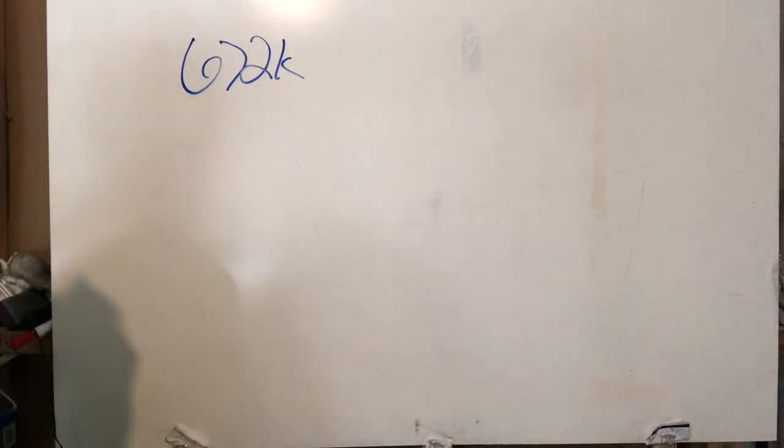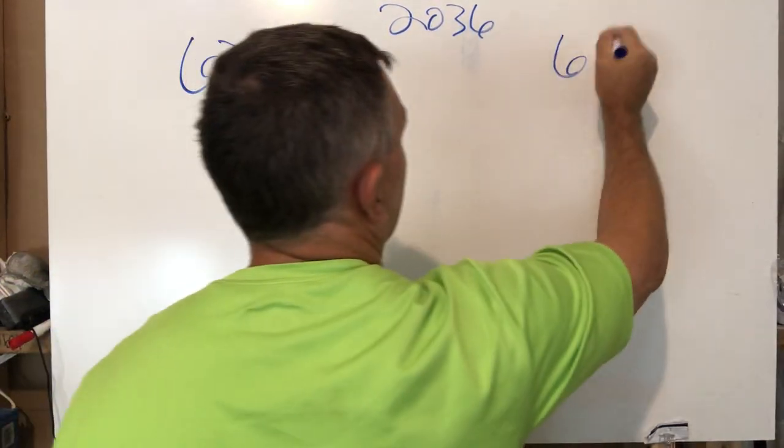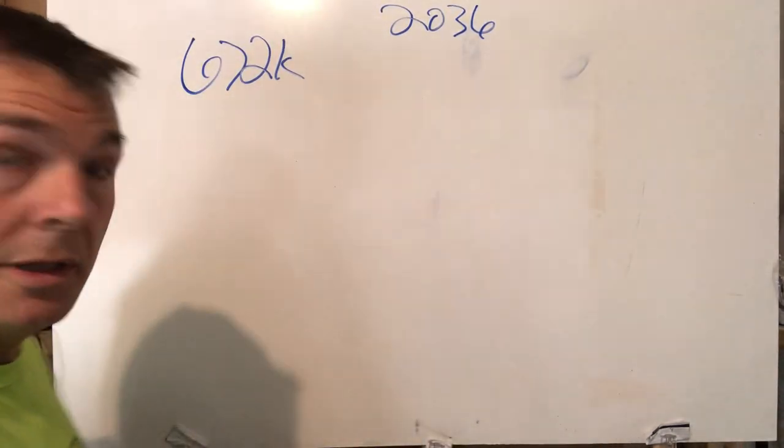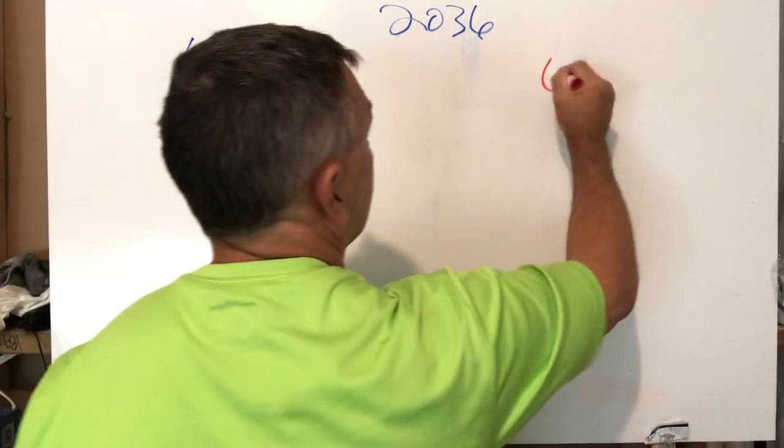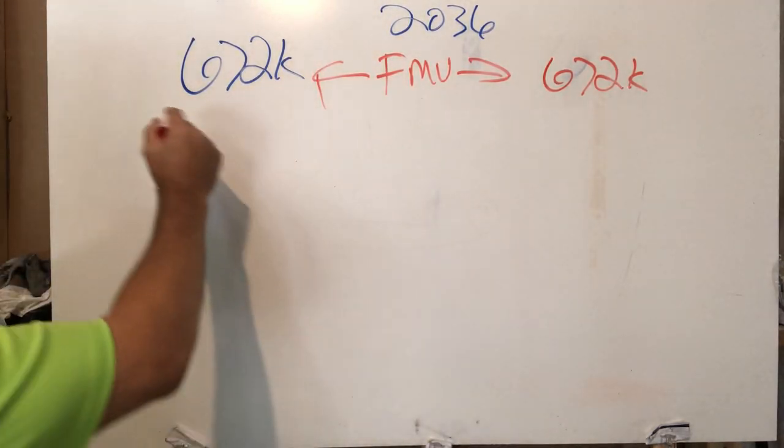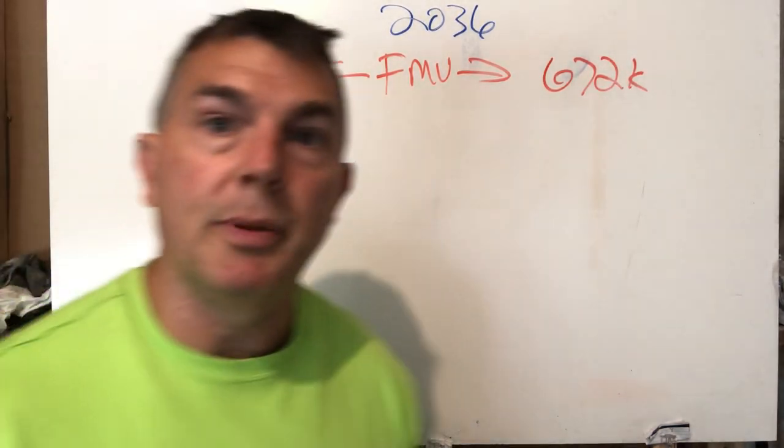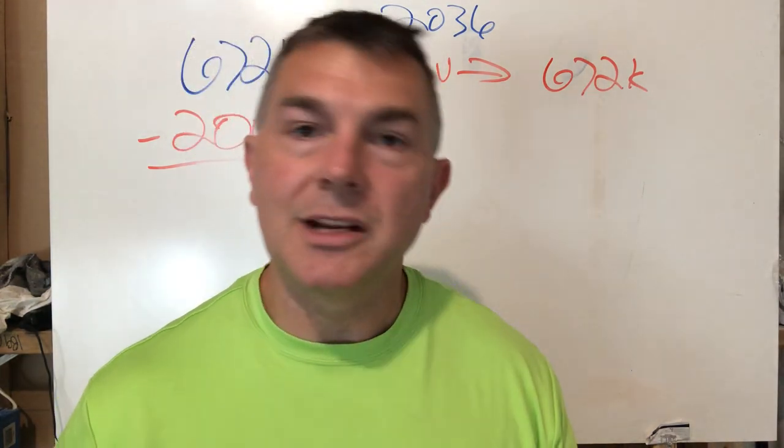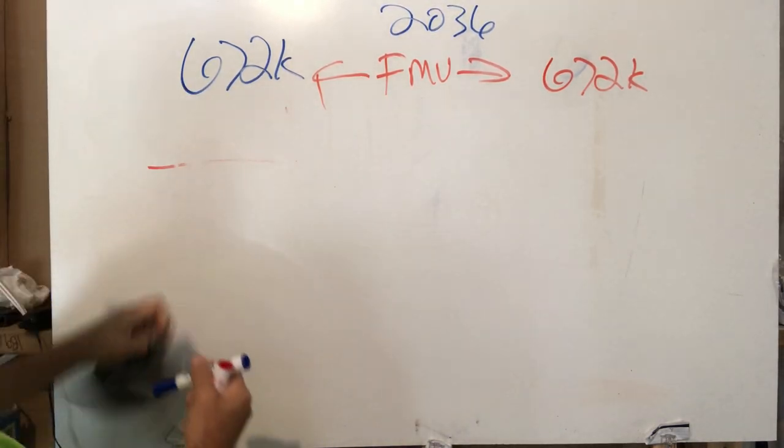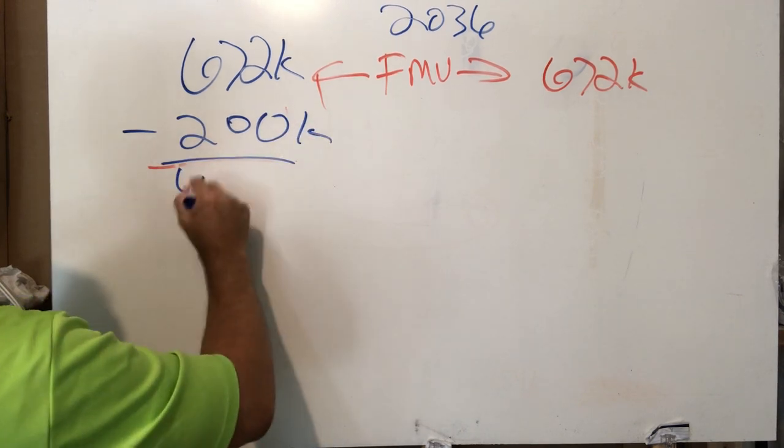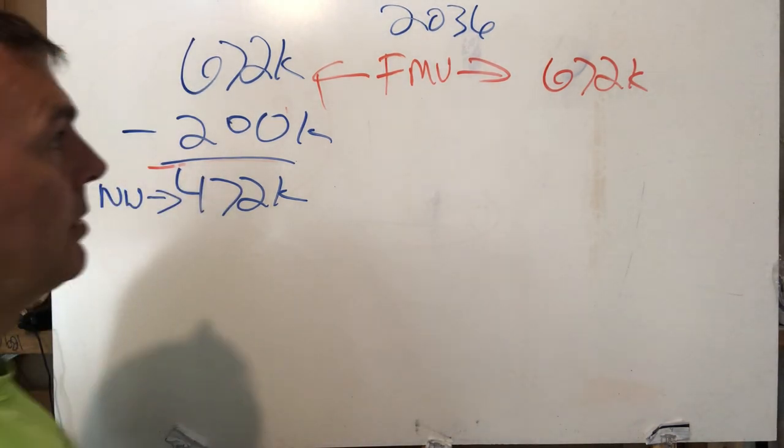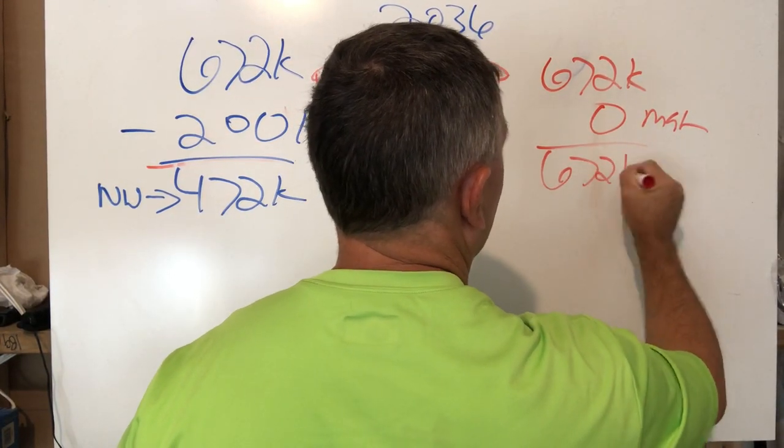So fast forward to 2036, $672,000 is the fair market value. And this one, we owe $200,000 minus $200,000 because we still owe $200,000. We paid half of it. We have $200,000 left. It's not a pure amortization schedule, but you get the gist. And this one, we owe $200,000. So our total net worth on our home is $472,000. And this one, we don't owe anything. We have no mortgage. So $672,000, that is our total net worth.